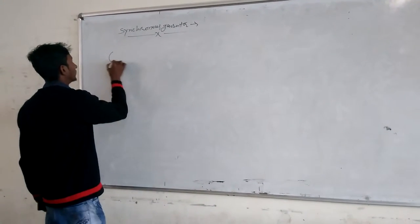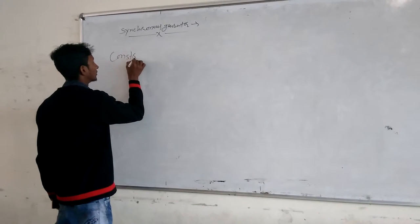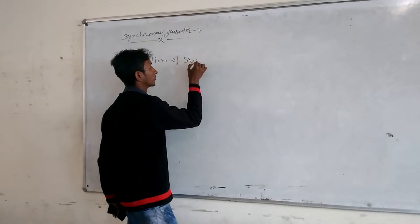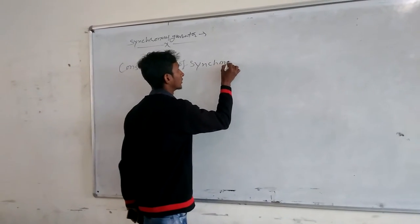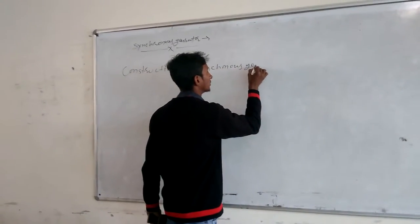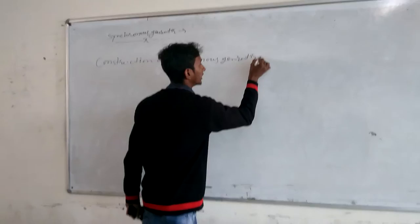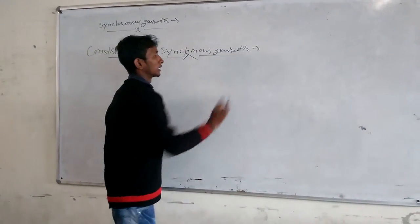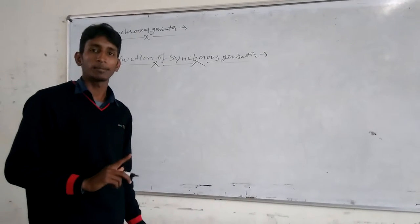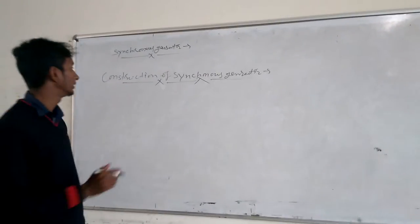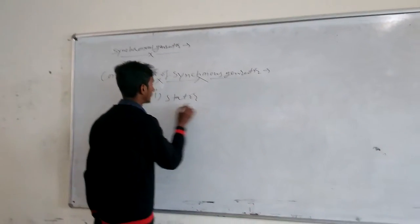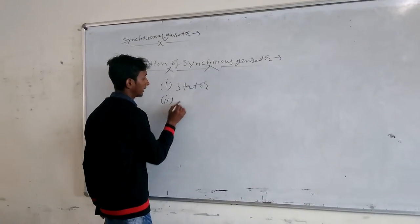Now, construction of synchronous generator. Construction of synchronous generator mainly consists of two parts. First is stator, second is rotor.